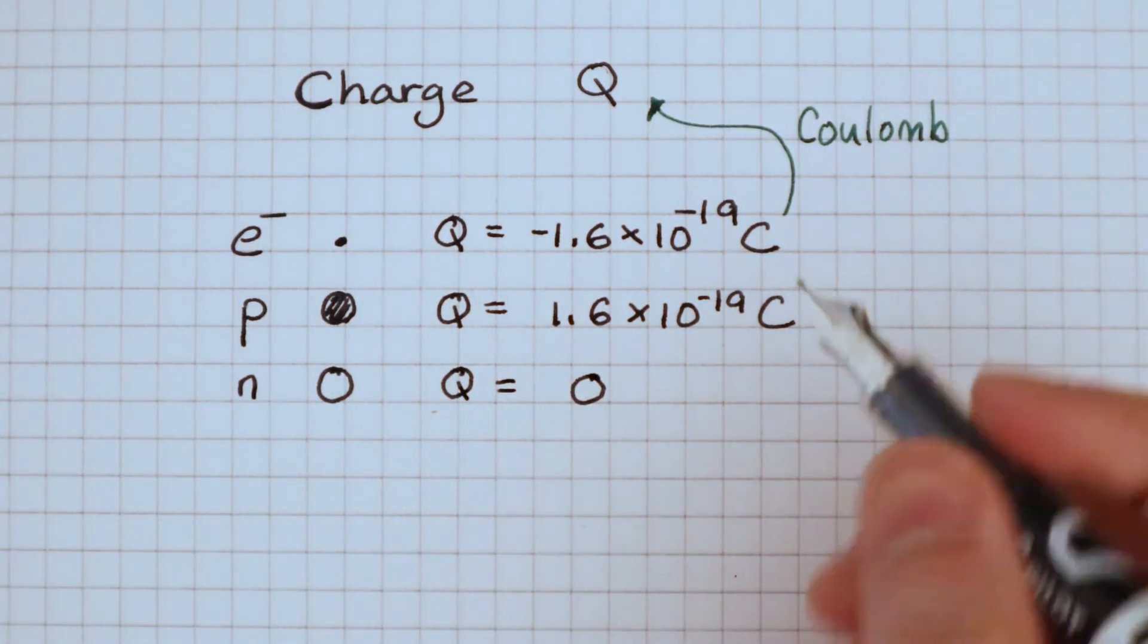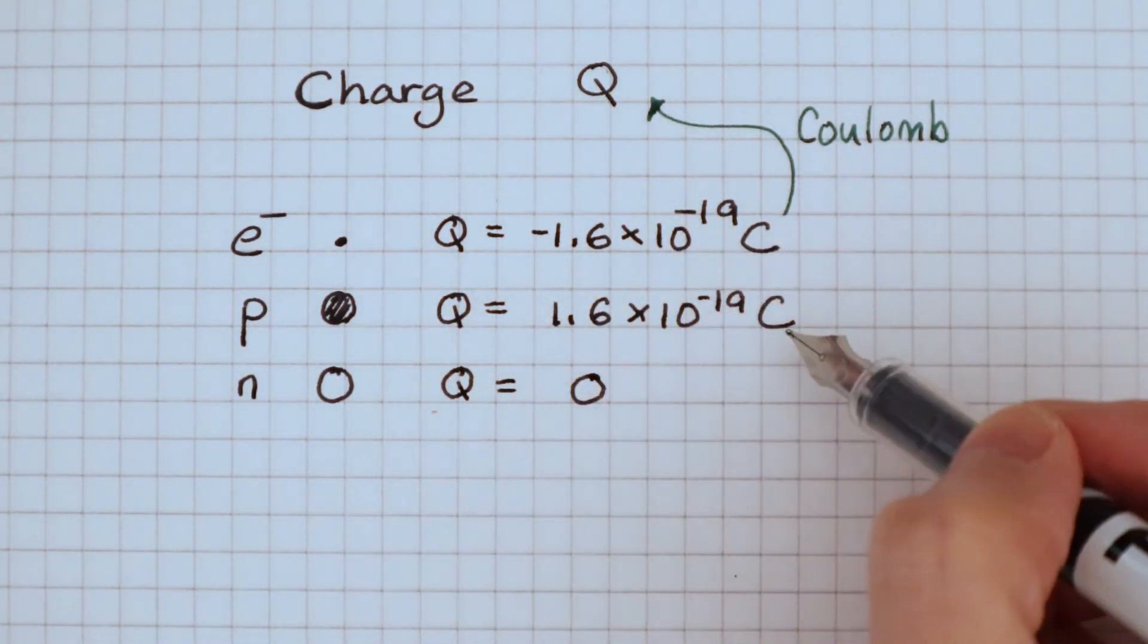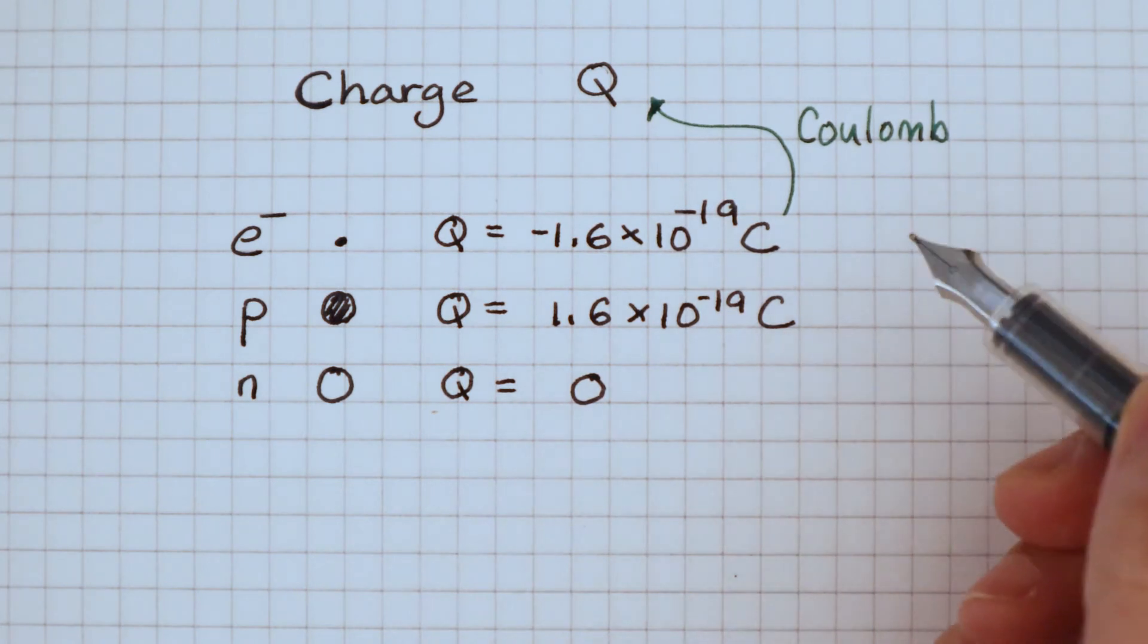It's really annoying to quote these tiny numbers all the time. To simplify things, we say that there is a relative charge.